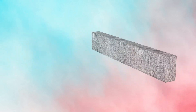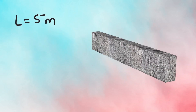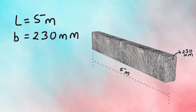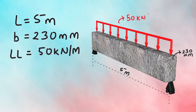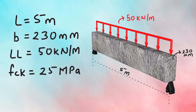Let us assume the beam is 5 meters long, 230 mm wide, simply supported on both ends and subjected to a load of 50 kN per meter. Also, let's assume the grade of concrete to be M25 and the grade of steel as Fe 500.